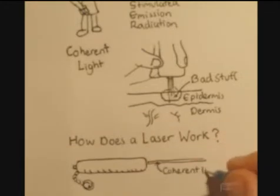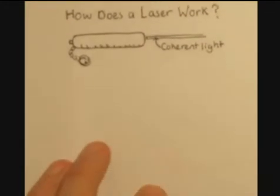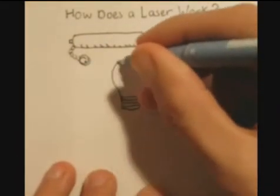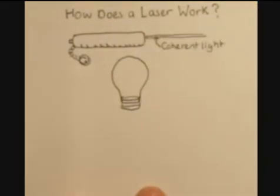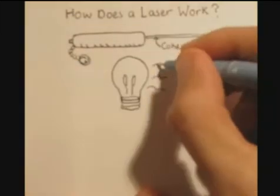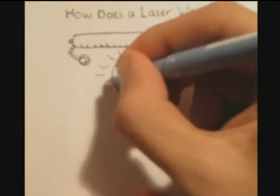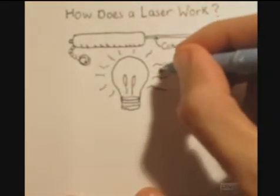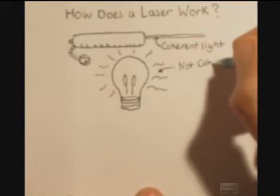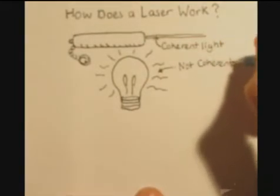And as mentioned, coherent light is synchronized, each ray of light is synchronized with each other, the phase, the wave. And this differentiates with, for example, a light bulb. It is not coherent, it's not synchronized. Each ray of light is not synchronized, it's different. The wavelength is not synchronized.